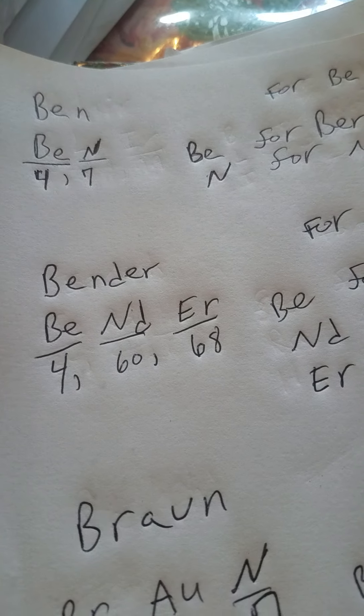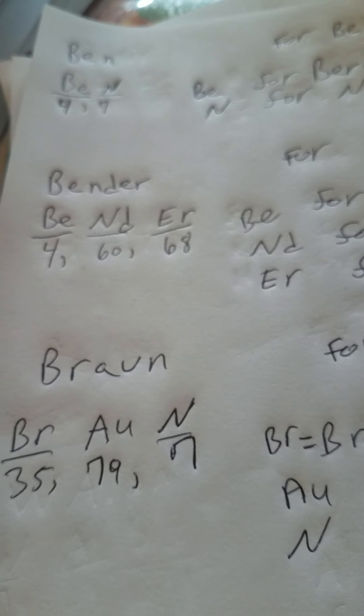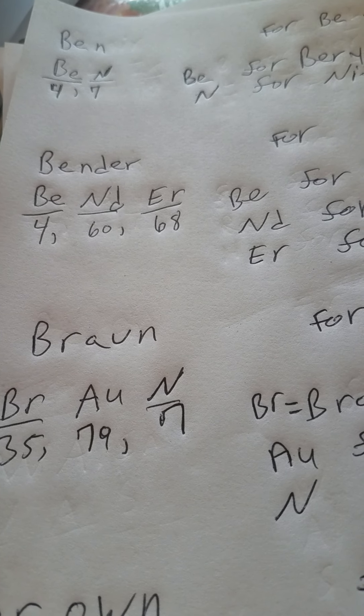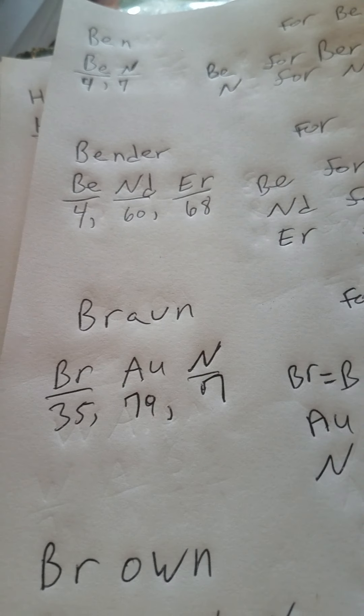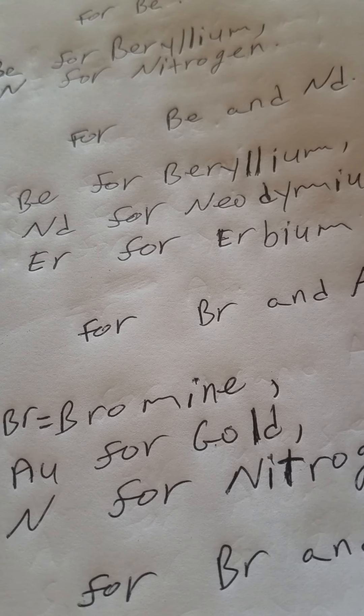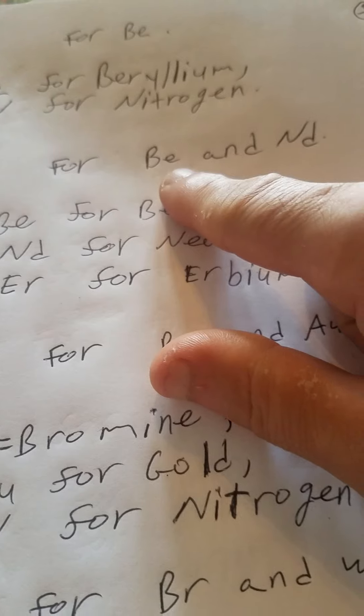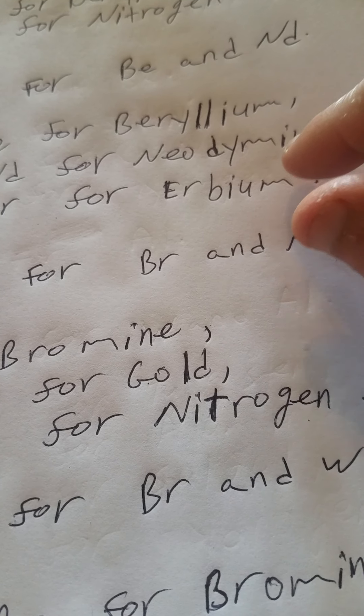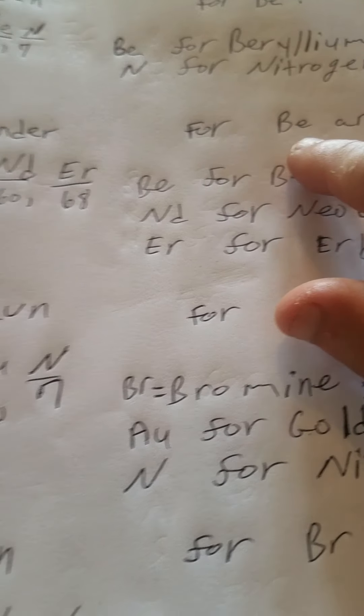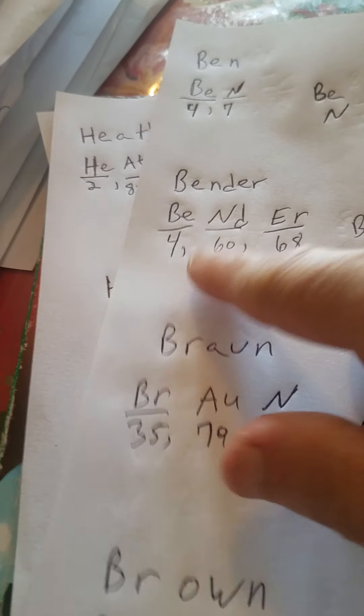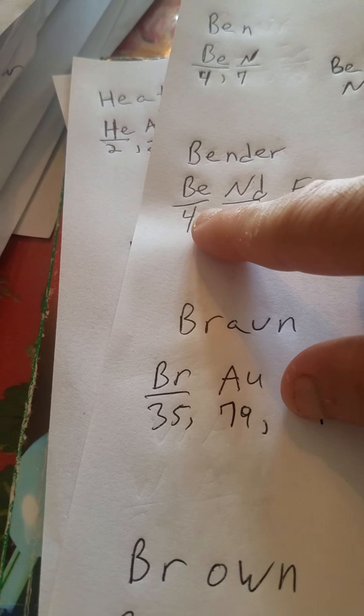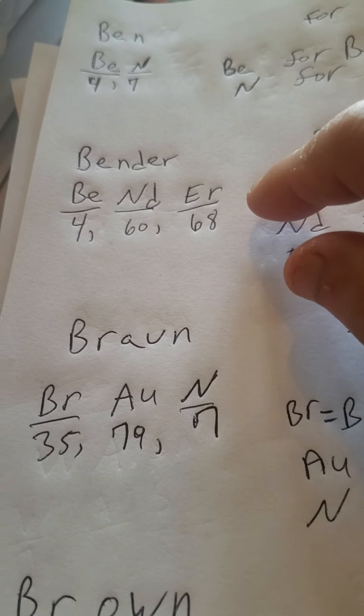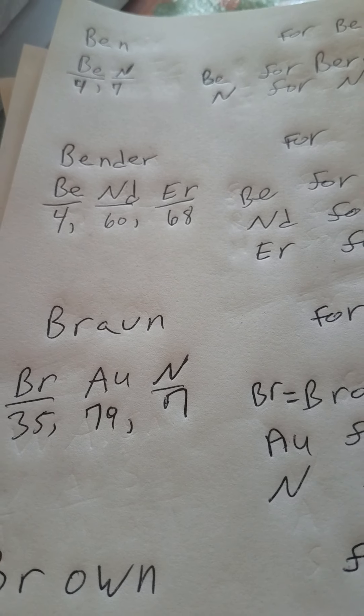Now we got the name Bender—it's a character in Futurama I think, and also the last name of a lot of people. So we got B-E-N-D-E-R. We're looking for capital N-D for neodymium. So you got beryllium capital B-E, number four, like we had for Ben. You got capital N-D, atomic number 60 for neodymium, and we got capital E-R for erbium, which is 68.